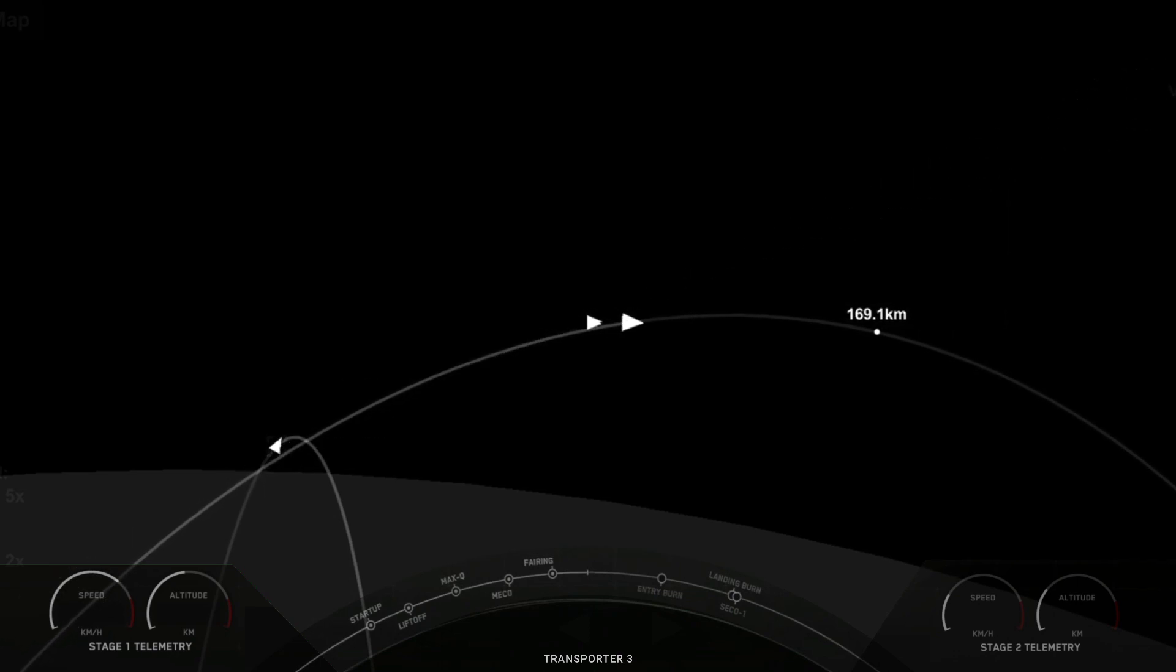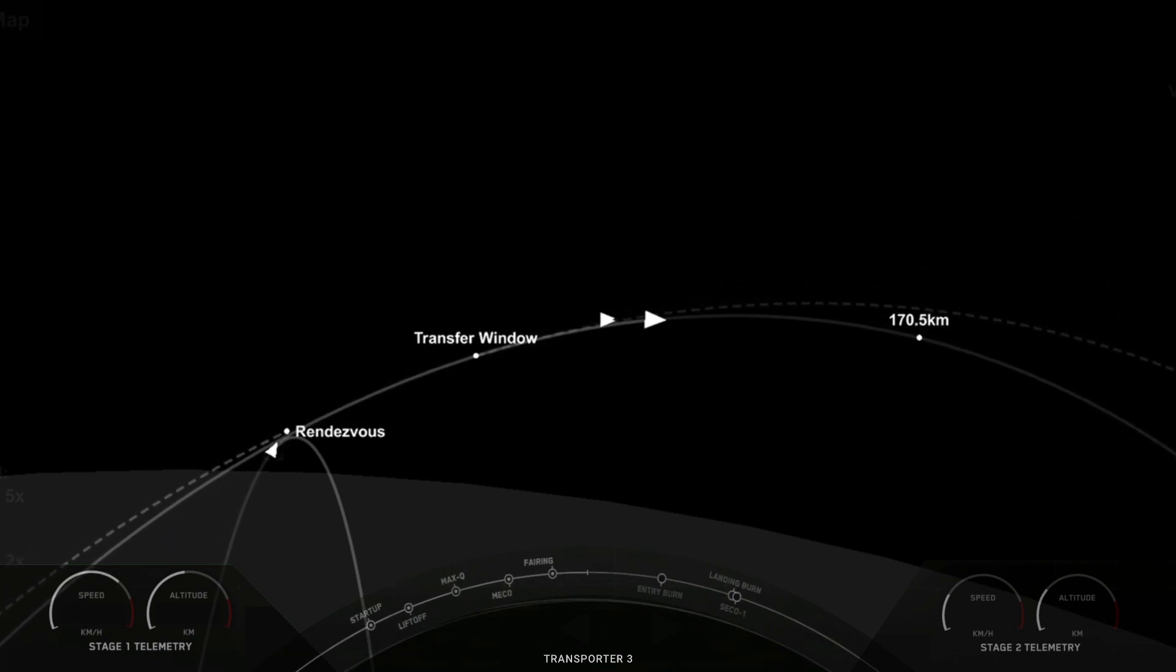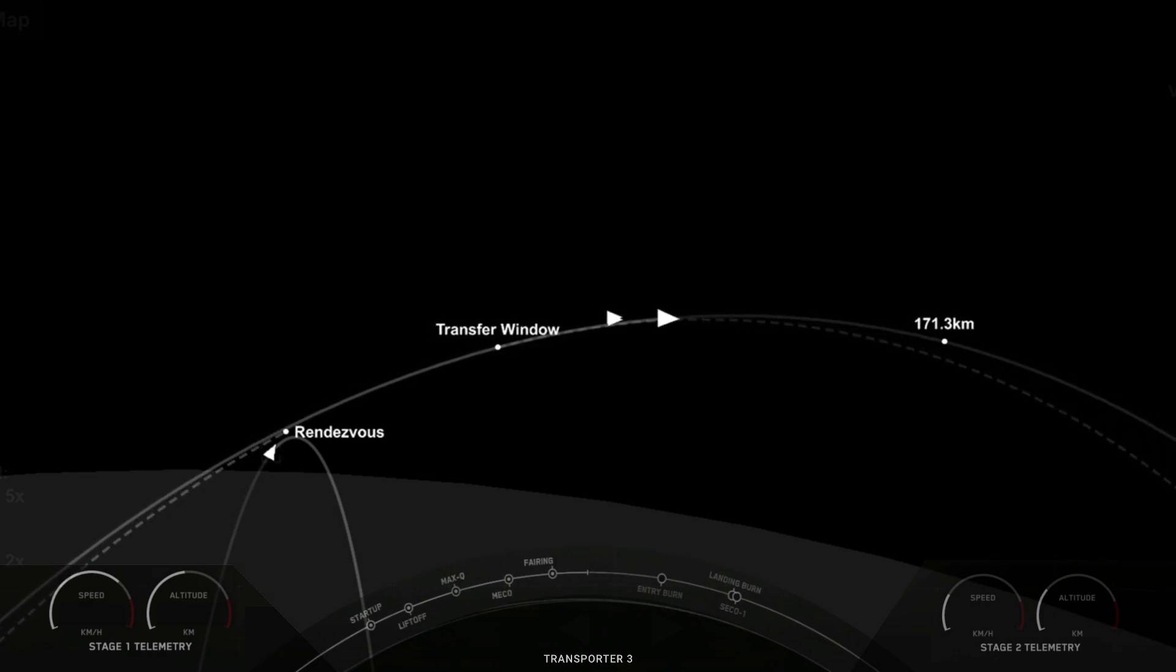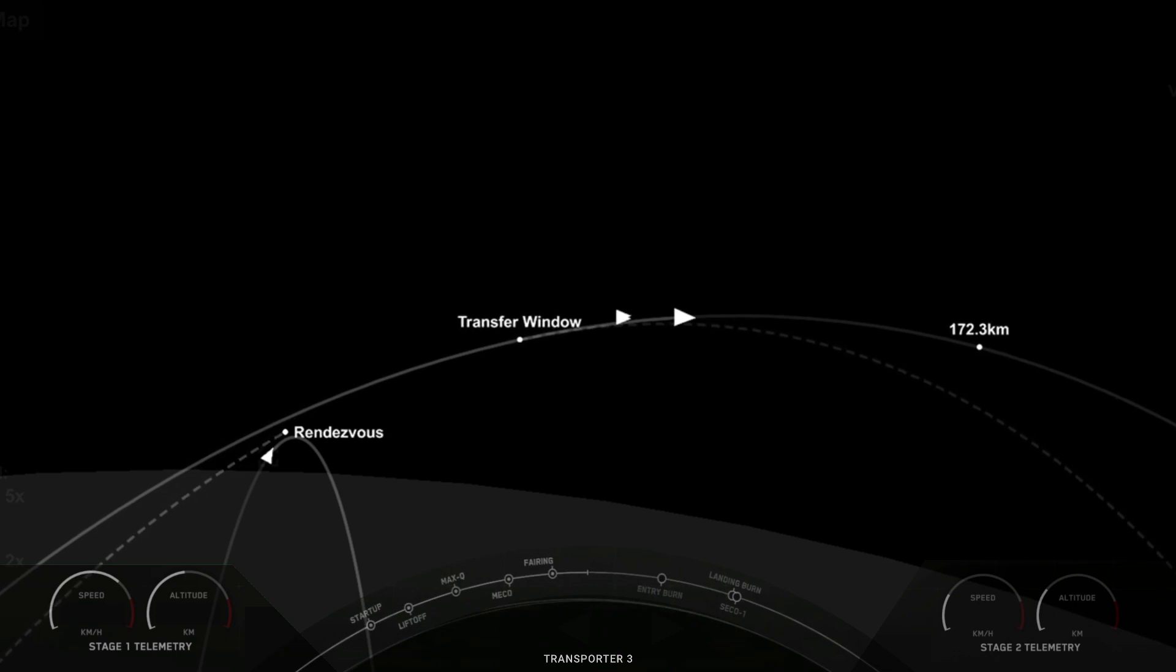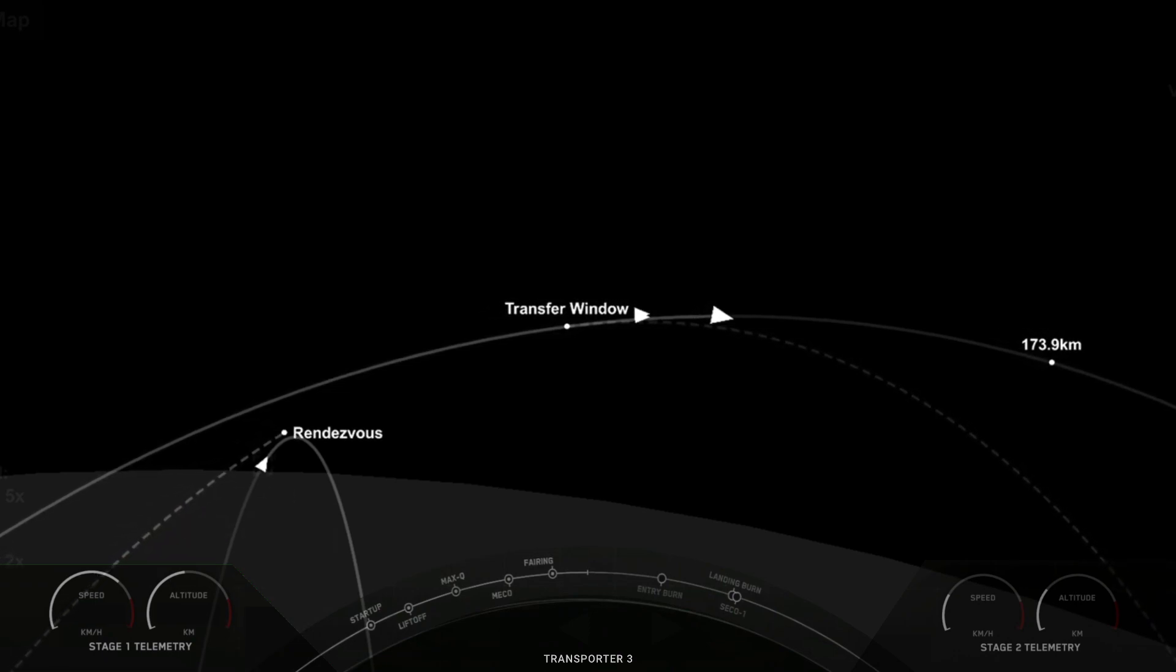The next milestone will be the first stage booster re-entry burn. Falcon 9 executes an entry burn to slow itself down before hitting the dense part of the atmosphere. Without this burn, relying on the atmosphere alone to slow down, the Falcon 9 would put unnecessary strain on the rocket.